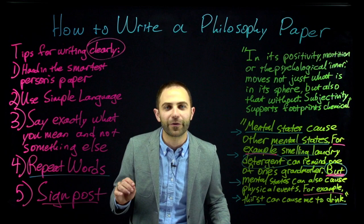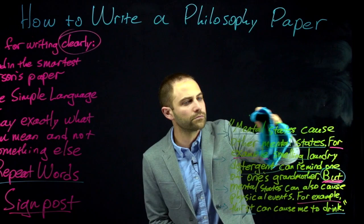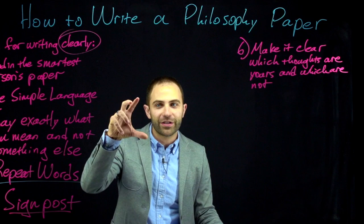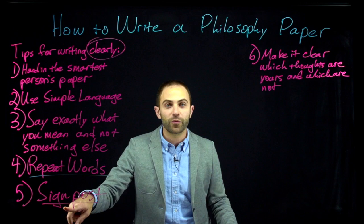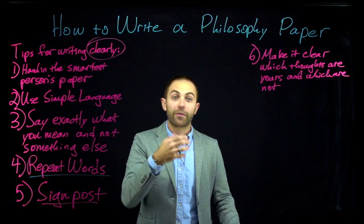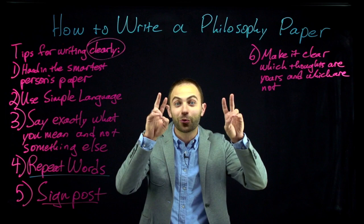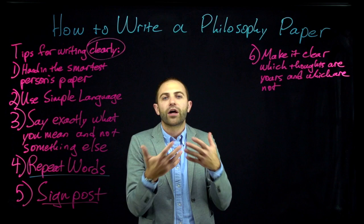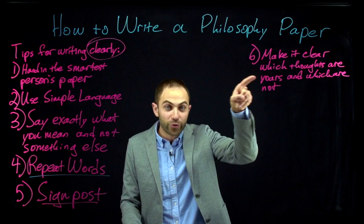Tip number six: make it clear which ideas are yours and which are someone else's. The primary way you do this is with signposting. Use phrases like 'it seems to me that...' or 'so-and-so thinks that...' — those are signposts telling the reader who thought this. Notice I just used the word 'me.' You're allowed to use the word 'I' in your paper — that's fine. What you shouldn't do is make unsubstantiated claims just because they seem a certain way to you. You are allowed to use 'I,' and you should do so if needed to make it clear which thoughts are yours and which come from someone else.